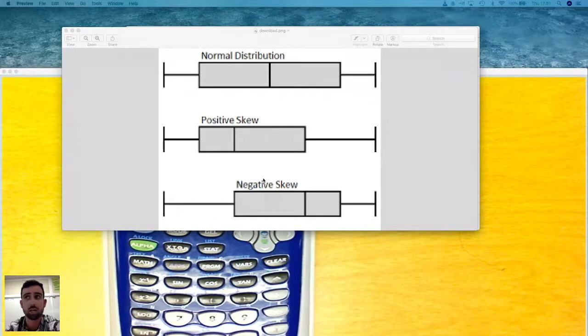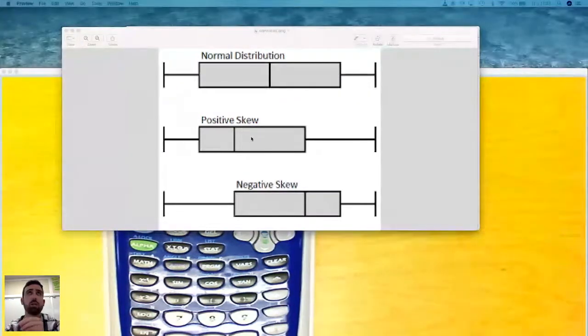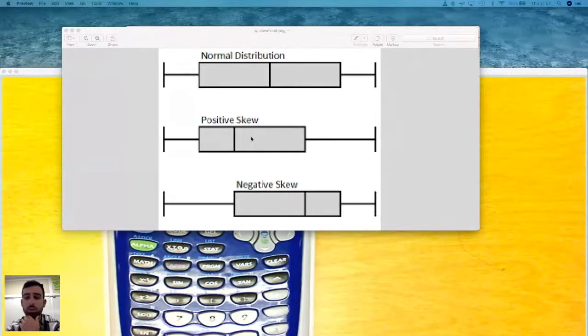And then negatively skewed, we also call that skewed to the left, is going to look like this, kind of the opposite of positive. Positive, again, just means skewed to the right. Negative means skewed to the left. So we actually can describe distributions using, or we can describe the shape of a distribution of a box plot. Not sure why they ignored it that year, but don't count on it moving forward, because I've definitely seen rubrics where they want you to count all four, or they want you to describe all four parts.